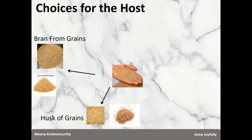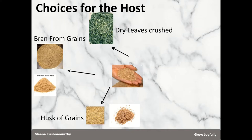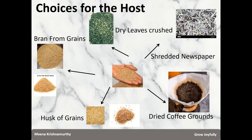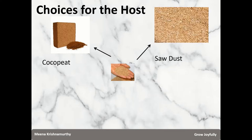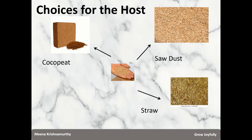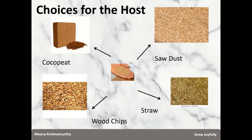There are also zero-cost options: crushed and pounded dry leaves, shredded newspaper, and dried used coffee grounds. I usually make Bokashi bran with rice or wheat bran, but I have also made successful batches with shredded newspaper and coffee grounds — they work very well. You may also use coco peat, dried coconut fiber, chemical-free sawdust, straw, or even wood chips. There are many choices — pick what is easily available to you.